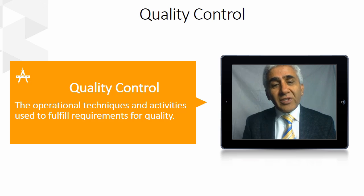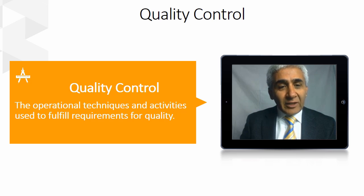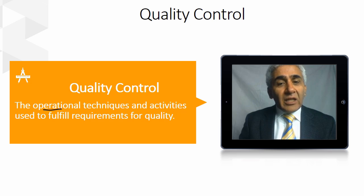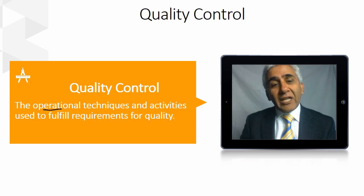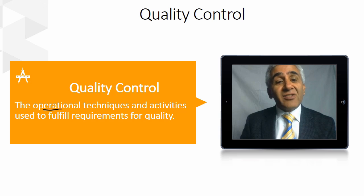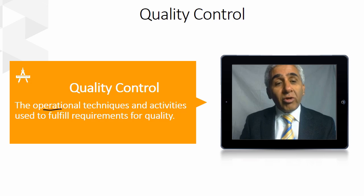Quality control consists of operational techniques. These are used to fulfill requirements for quality, so they are related to inspection, related to detecting problems, related to finding problems, and making sure that the defined standards or requirements are fulfilled.